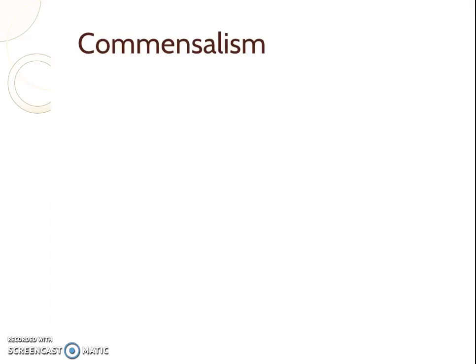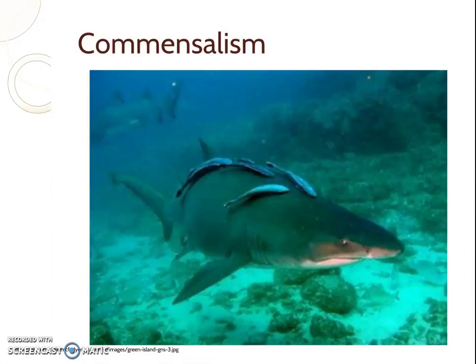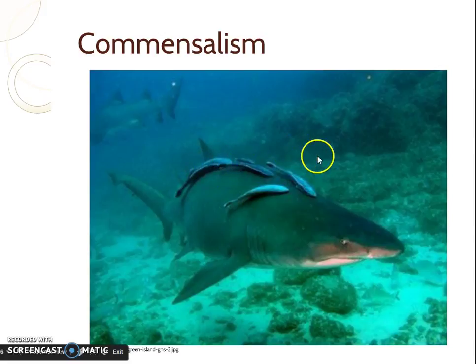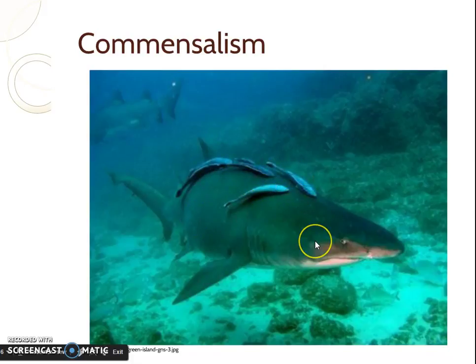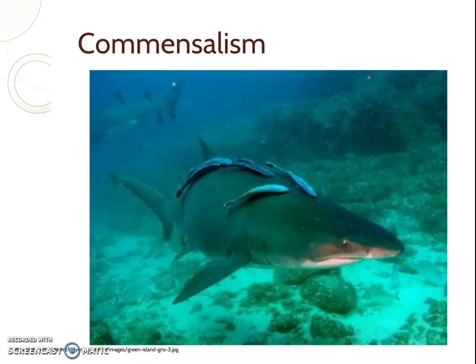Commensalism is the hardest one to say and is the rarest in nature. The best example is the shark and the remora. Remora are fish that swim near sharks — they're not suckerfish, they don't stick to the shark. When a shark grabs onto prey and shakes it, that's a messy process and there are going to be bits of food all over in the water. The remora swim around and pick up the scraps. It doesn't impact the shark at all — it's not worth the energy for the shark to get them. So it doesn't impact the shark in any way.